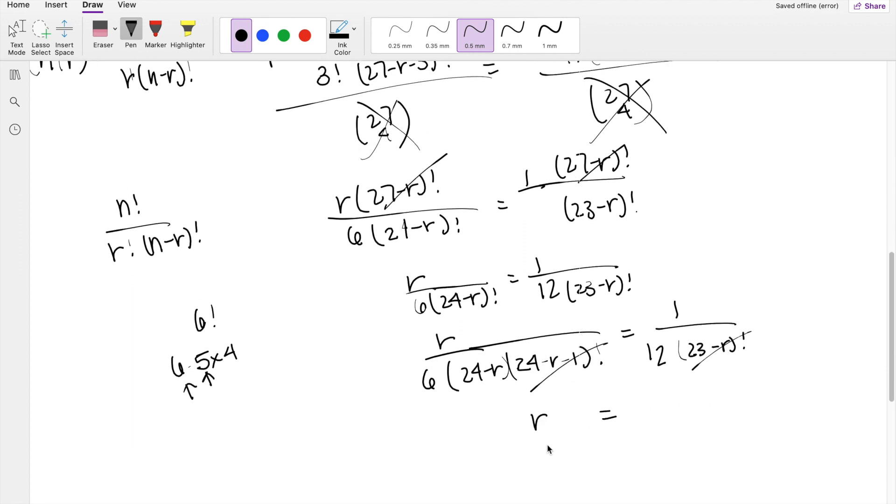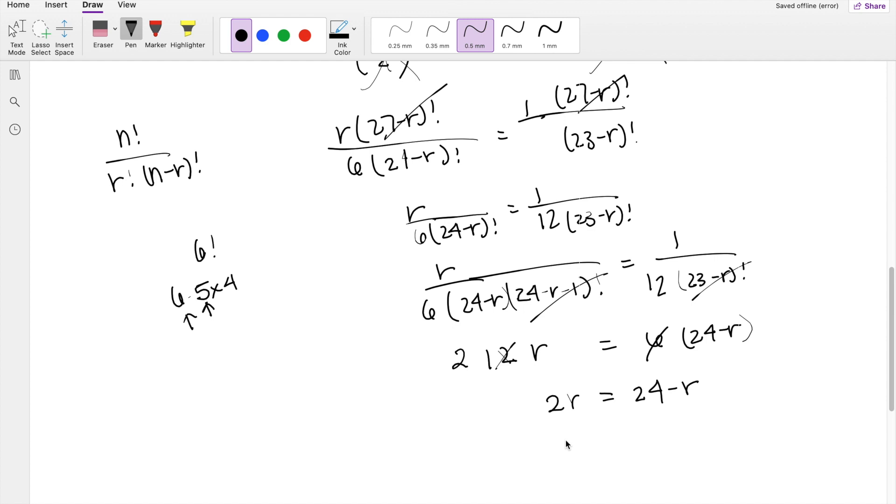And you're left with, oh, this is multi-step. I'm going to bring the 6 on this side and 12 on this side. And I'm also going to bring the 24 minus R on this side, 24 minus R. So these become 2. 2R is equal to 24 minus R. Bringing the R on this side, you get 3R is equal to 24. So then R is equal to 8.